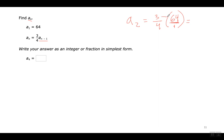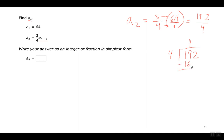The top times the top and the bottom times the bottom — that's going to give me 192 over 4. Now I'm going to divide: 192 divided by 4. 4 goes into 19 four times; 4 times 4 is 16; remainder 3; bring down the 2. 4 goes into 32 eight times. So the second term is 48. El segundo término es 48.